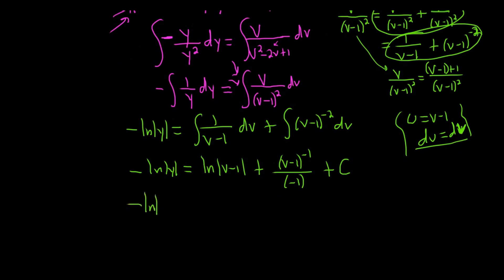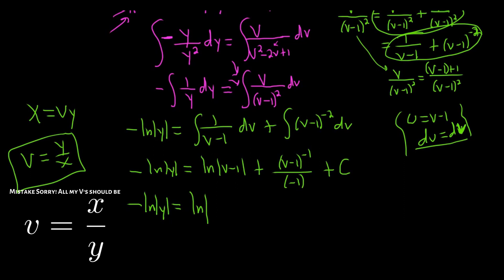This is negative ln absolute value of y equals, ah, what do we do now? So x, x was vy. So v is equal to x over y, right? Super key, right? So you got to go back to where you started now because you want to finish with only x's and y's. So this is ln absolute value (x/y minus 1). And then this is minus 1 over (v minus 1). So this is (x/y minus 1), right? Because it comes down. It becomes this. And then you replace v with x over y. And then plus c.